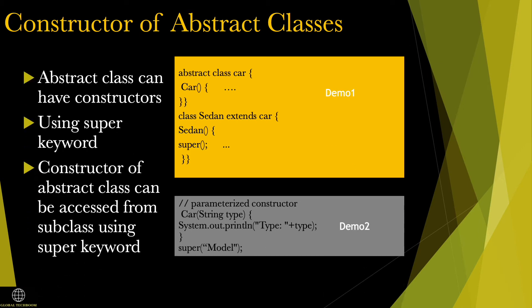Just like a regular class, an abstract class can have constructors. Constructors of an abstract class can be accessed from a subclass using the super keyword. The given example lists out the way to access an abstract class constructor. The super method must always be the first statement in the body of the constructor of the subclass, otherwise it throws an error.